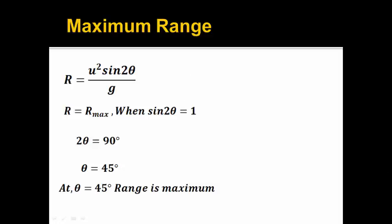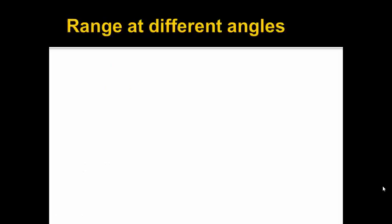Since range is maximum at 45 degrees, then there has to be some relation between the ranges for θ greater than 45 and less than 45. We will now derive an expression for range at different angles. You know the expression for range is u² sin2θ / g.